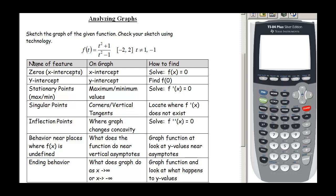Welcome to the second video on analyzing graphs. In this video we are going to be looking at a more complicated function than the first one we looked at. The first function was a polynomial, and this time we're going to look at a rational function. We're going to restrict the domain between negative 2 and 2, and we definitely do not want to let t be 1 or negative 1 because that would give us a 0 in the denominator. So our domain is from negative 2 to 2 with the exception of 1 and negative 1.